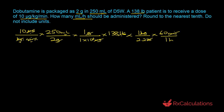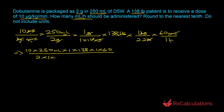The minutes cancel out and we are now in milliliters per hour. Multiplying all numerator terms and dividing by all denominator terms: 10 × 250 × 1 × 138 × 1 × 60 divided by 2 × 1 × 1,000,000 × 2.2 × 1, which equals 4.7 milliliters per hour. The question says round to the nearest tenth — we're already there. Do not include units, so the answer is 4.7.